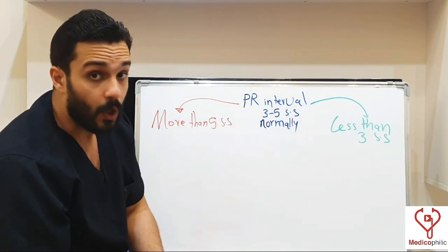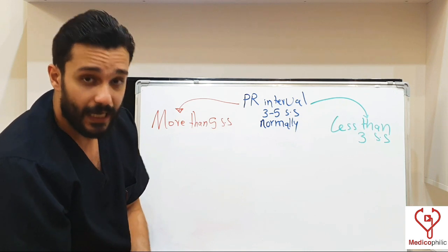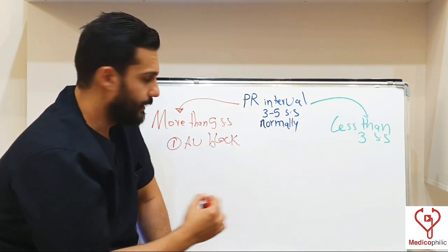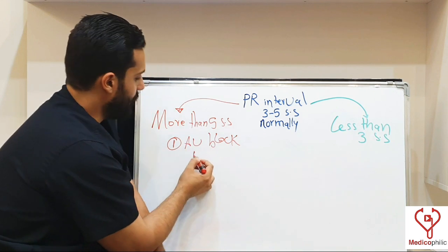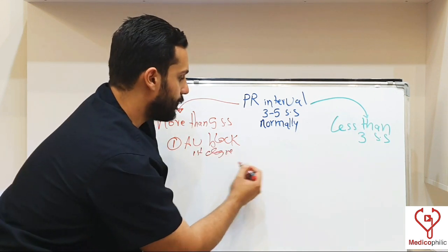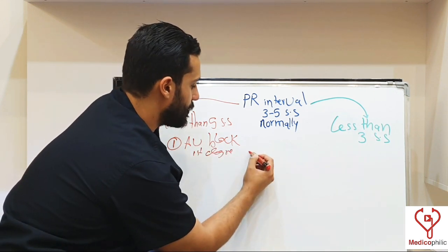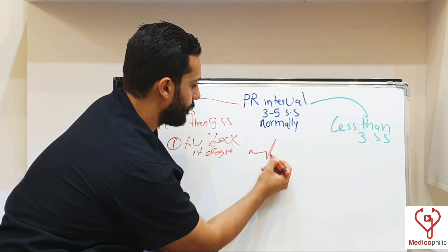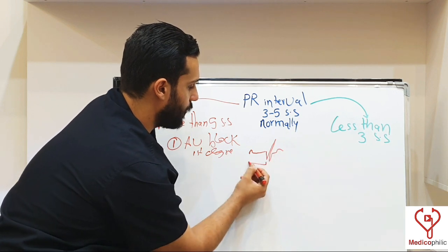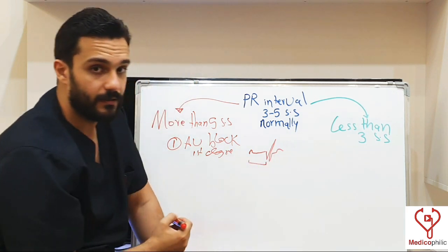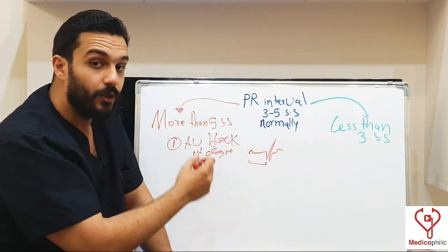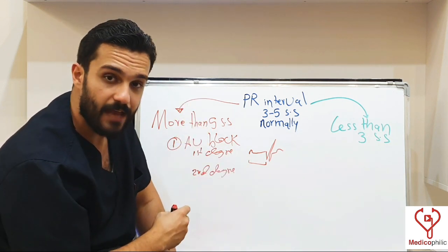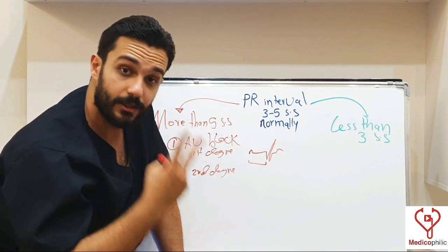The most common cause for the prolonged PR interval is AV block. AV block has 3 types, beginning with the first degree AV block. Here, the ECG is showing prolonged PR interval, and the prolongation is fixed — more than 5 small squares in all the 12 leads of the ECG.